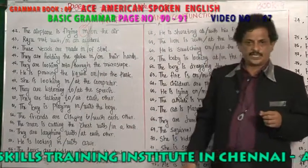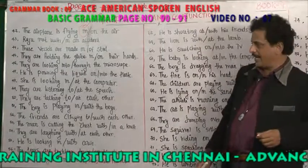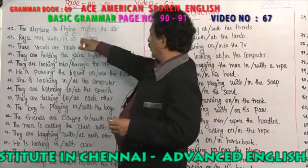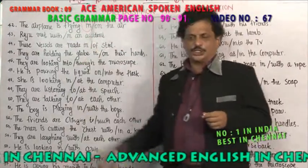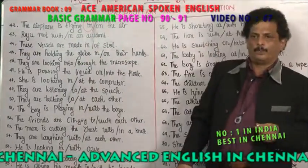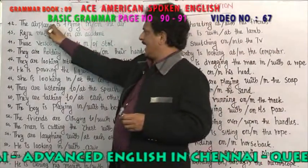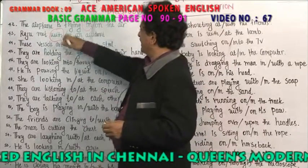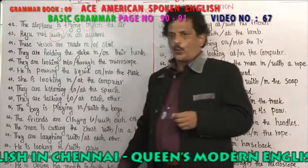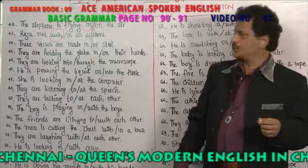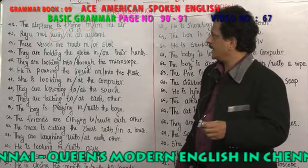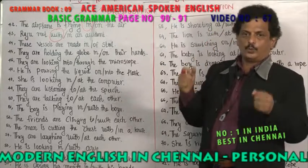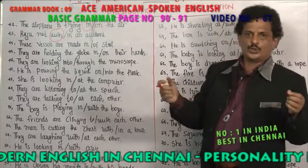'On' is used for surfaces; 'in' is used for something which is big or large. Raju met with an accident or in an accident? Why do you use 'with an accident' and not 'in an accident'? 'With an accident' is correct because 'with' is used to have a connection.